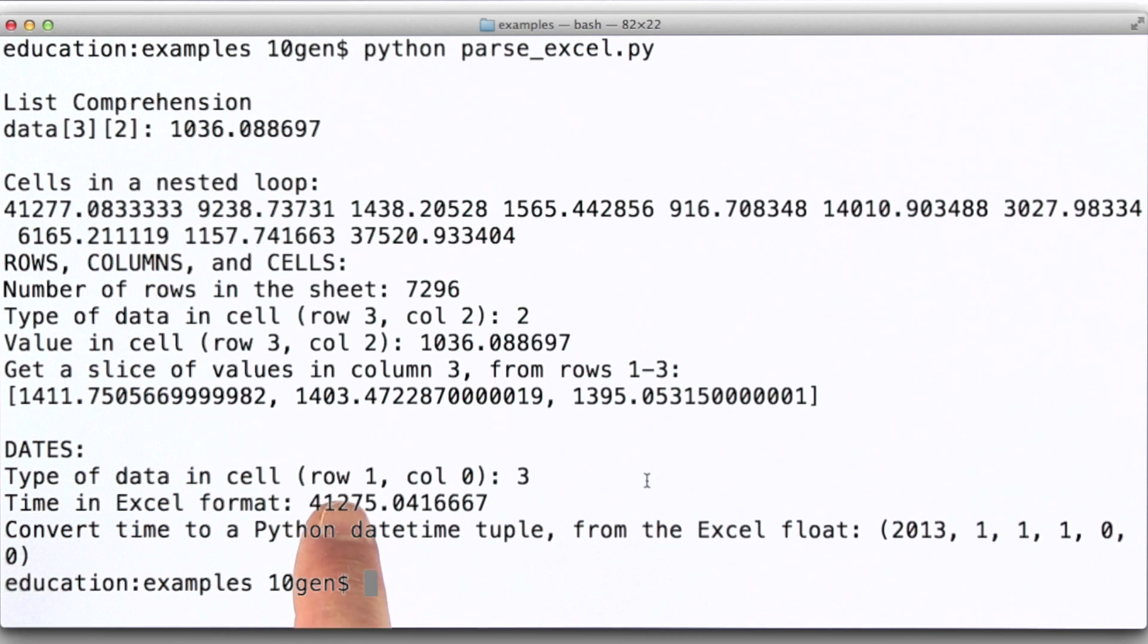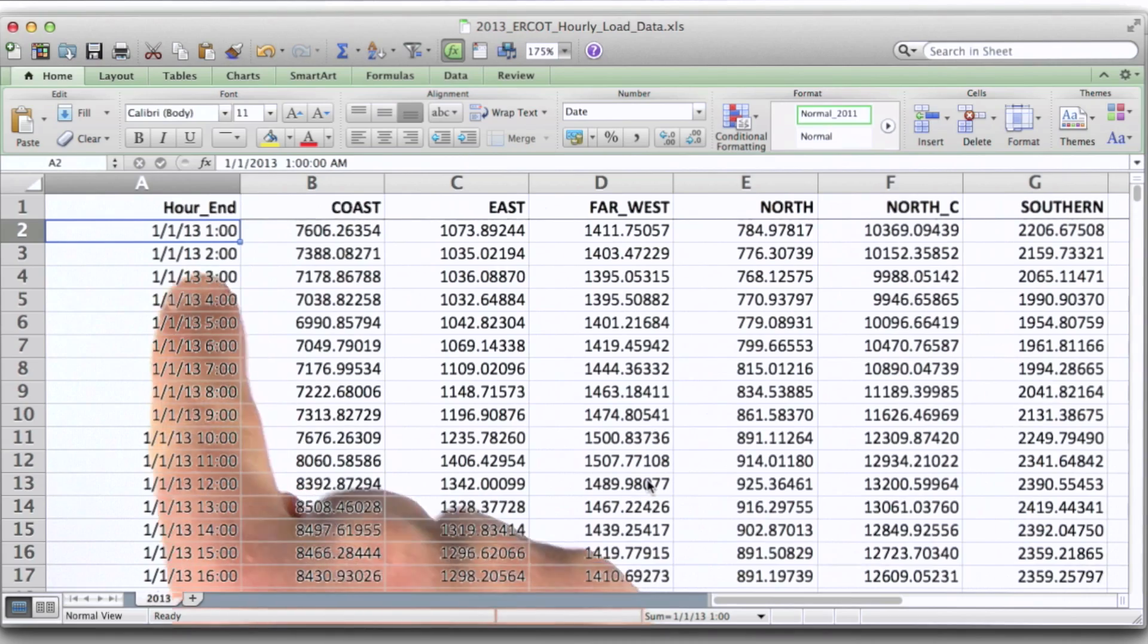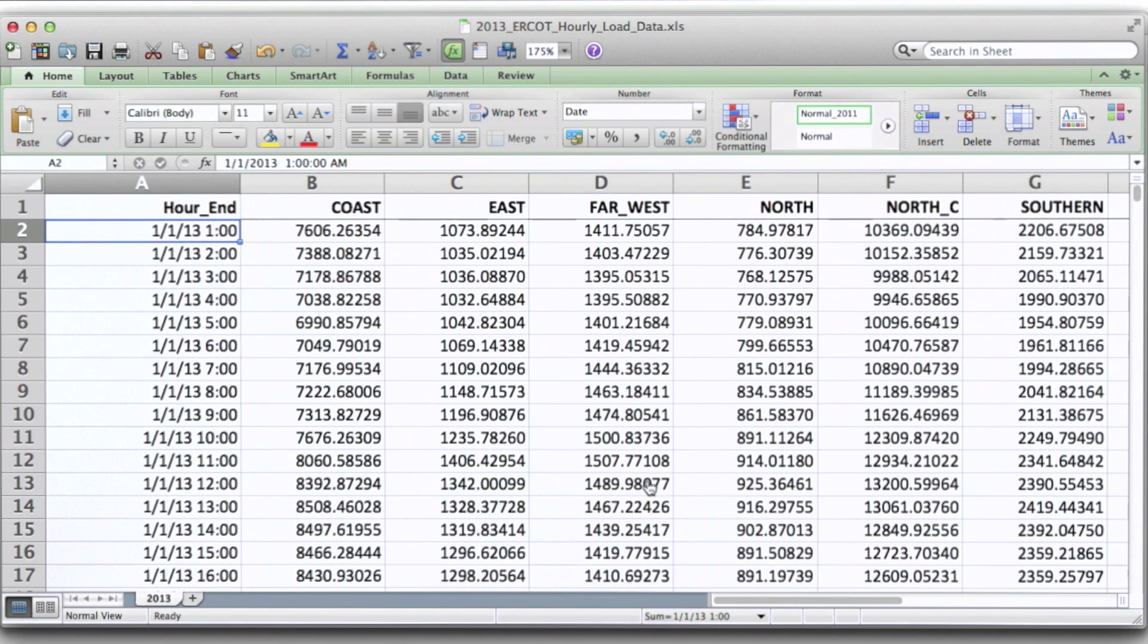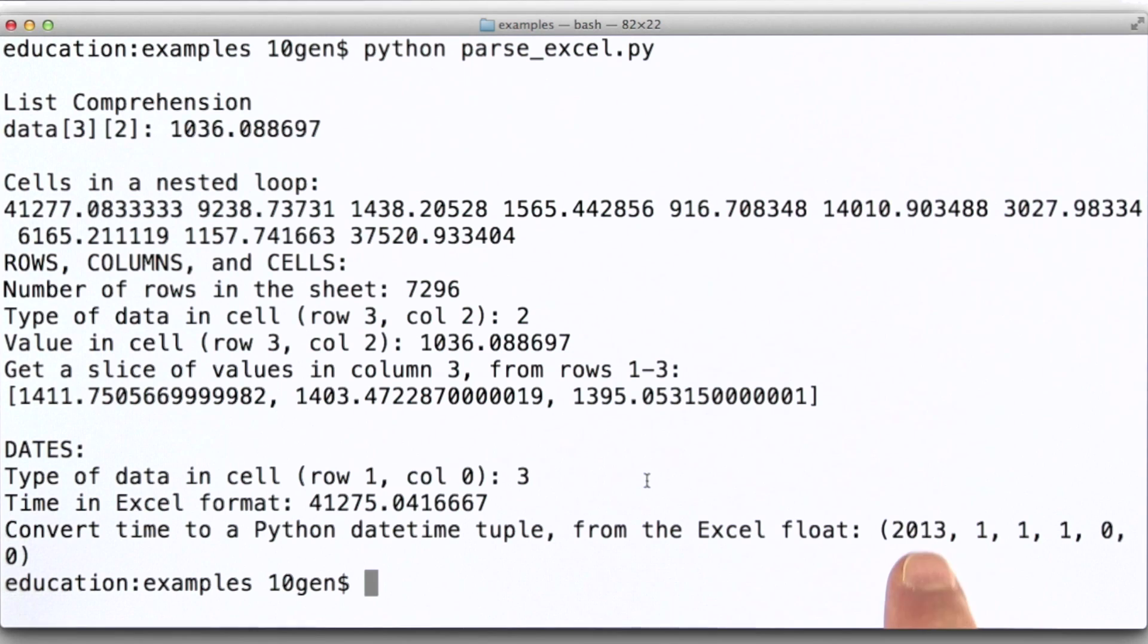So it's that very first cell at the top, this one here. And note that what we're pulling out there as the value is in fact, year 2013, January 1st, 1 AM.